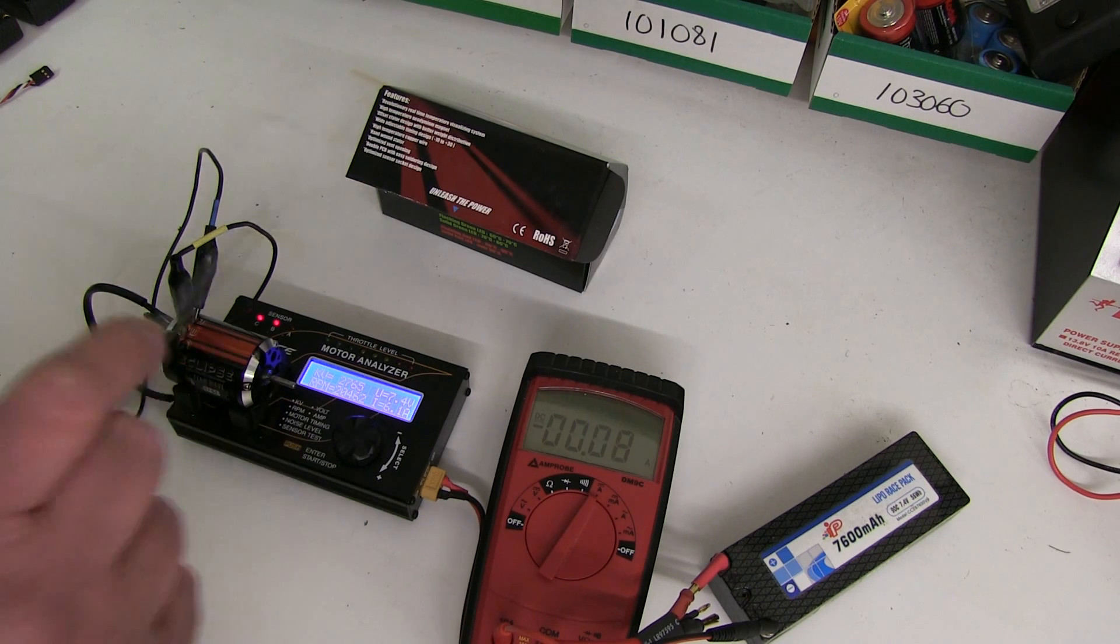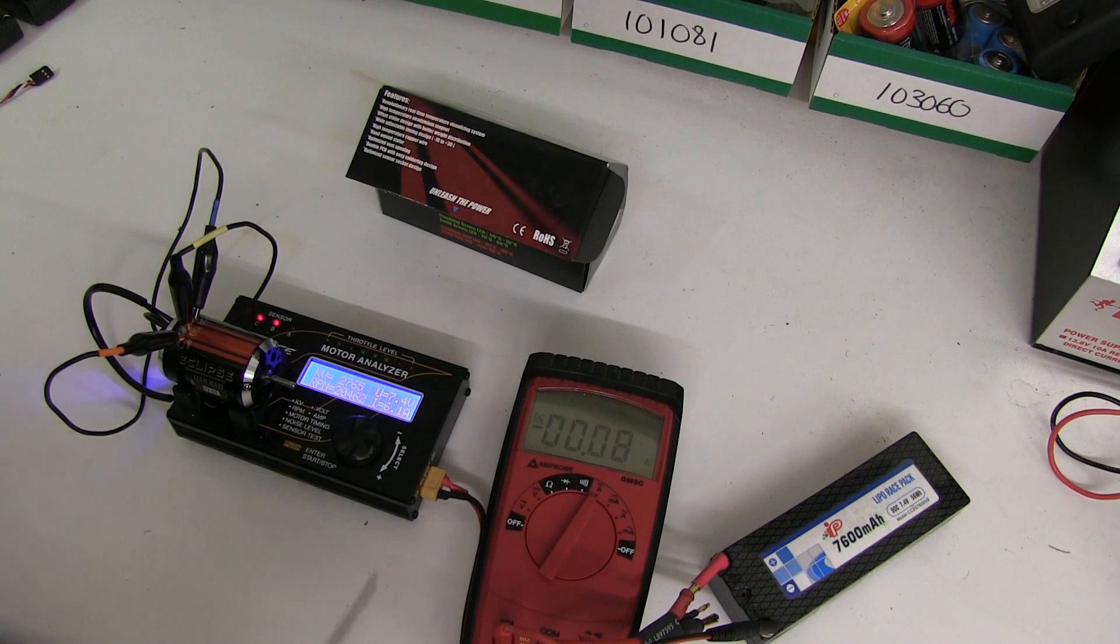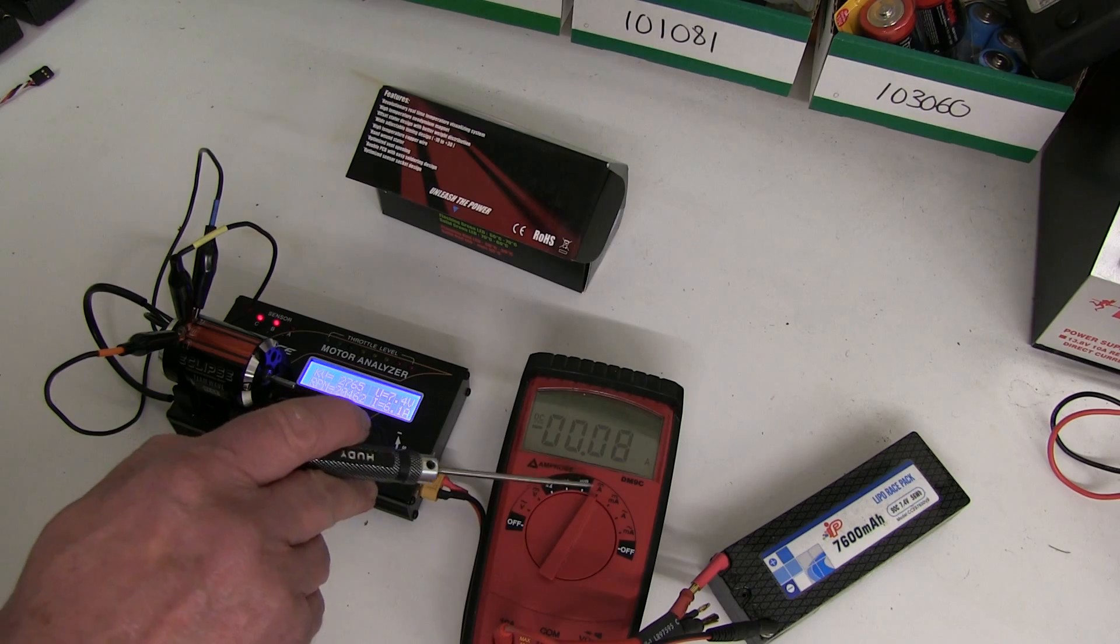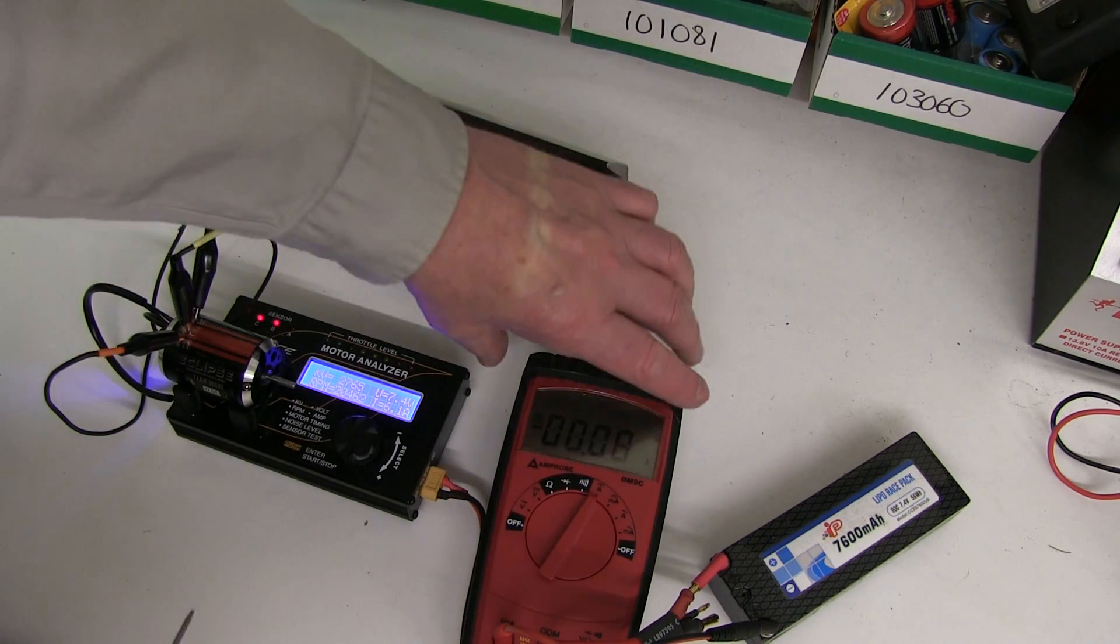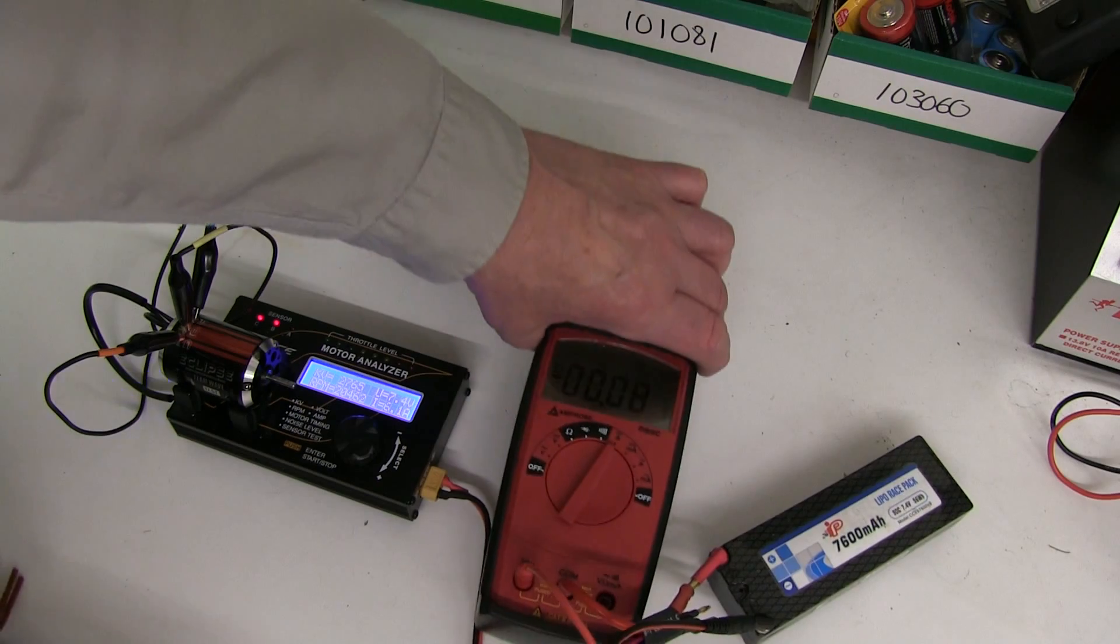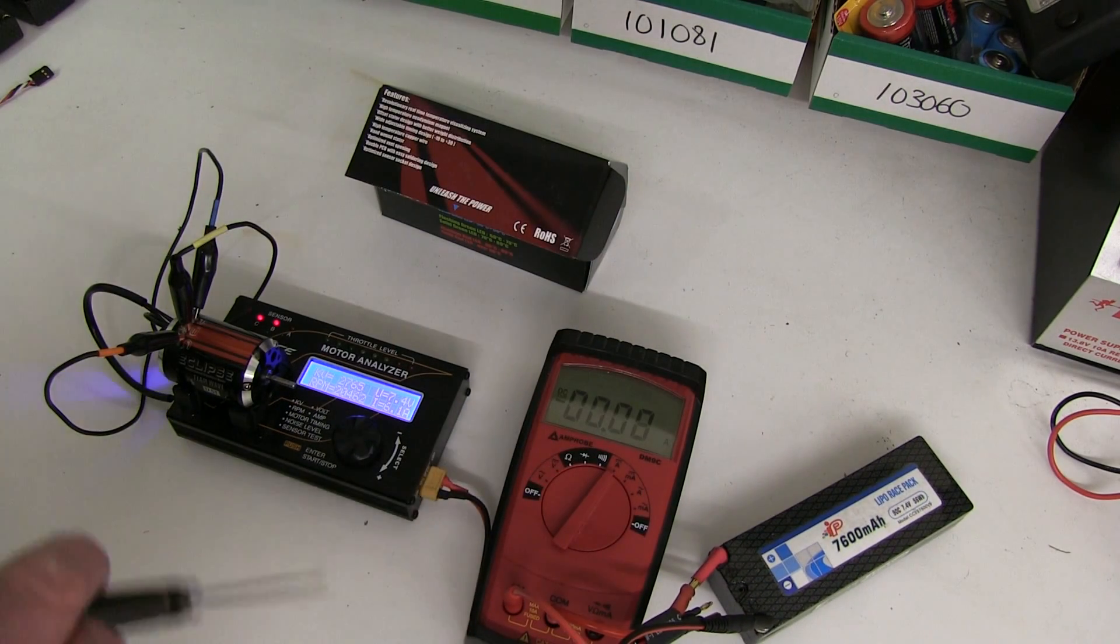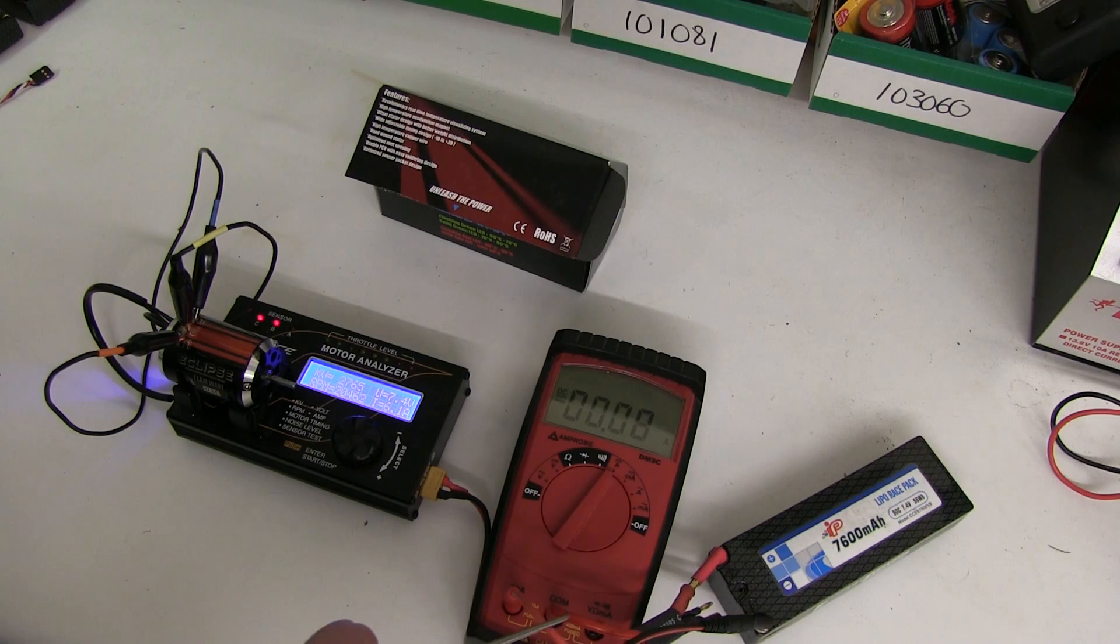Now if it had been higher or lower you'd adjust the timing to get 6 amps. Now you haven't got one of these little testers but you can buy, or you may have an ammeter or a multimeter that does 10 amps on the scale. This one's got 10 amps, it doesn't have to be expensive, any cheap one. And then you connect it, I just use a spare charging lead.